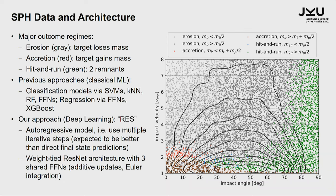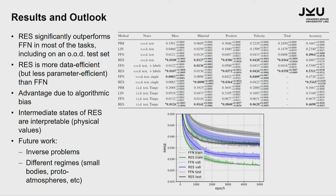Our approach was a genuine deep learning approach. We built a residual net architecture with an autoregressive model that ticked through time steps — multiple iterative steps. We have an inductive bias due to the physics, and a weight-tied residual net with actually three shared feed-forward networks doing adaptive updates, which effectively is something like an Euler integration. This is one of few examples where we have a very physics-inspired way how the network works, and therefore also an interpretability of the result.